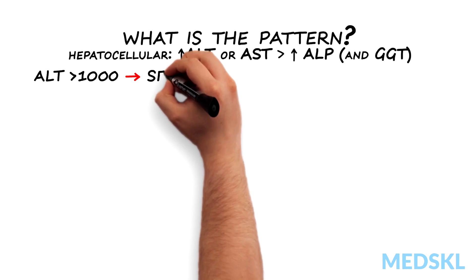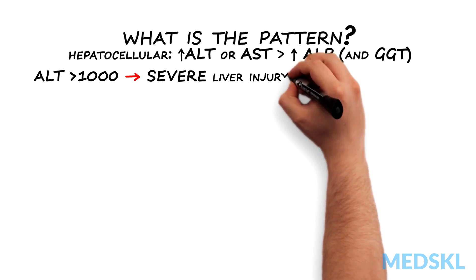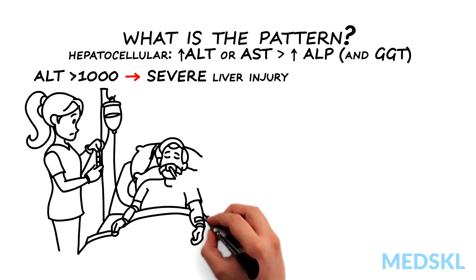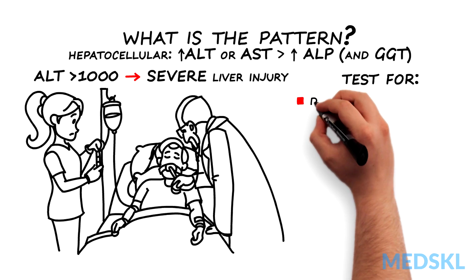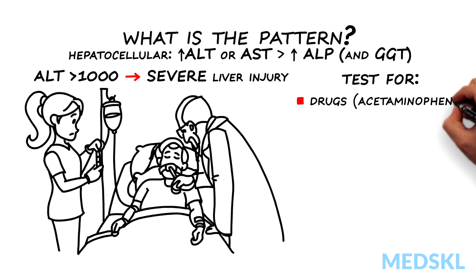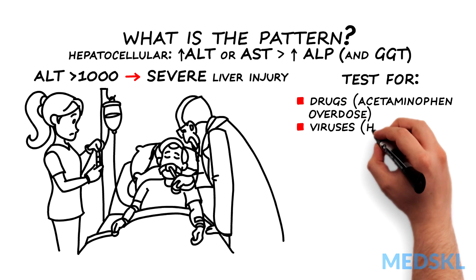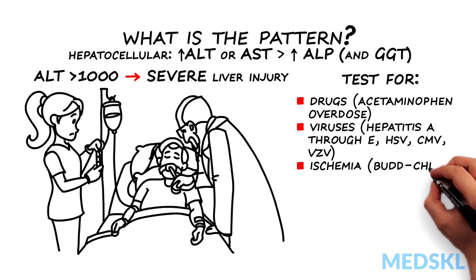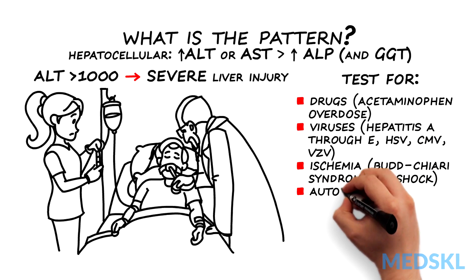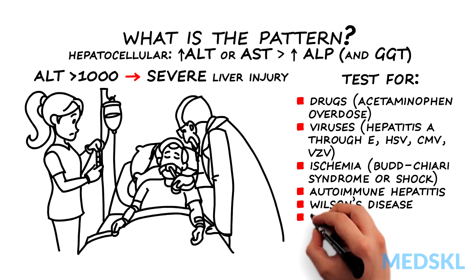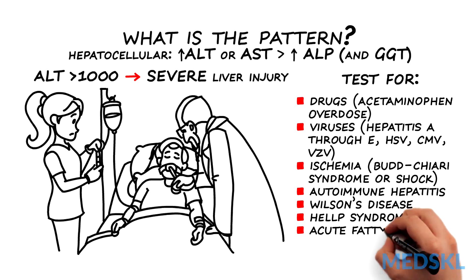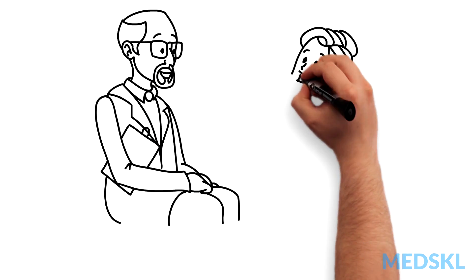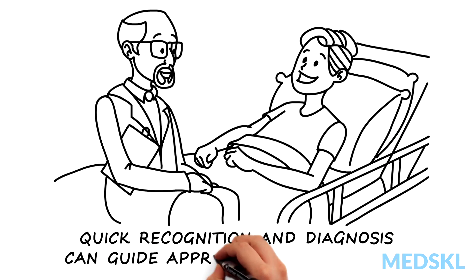If the ALT is greater than 1000, there is severe liver injury which is always acute and symptomatic. These patients are at high risk of acute liver failure. If you see these values, think and test for the following: drugs, especially acetaminophen overdose; viruses including hepatitis A through E, HSV, CMV, and VZV; ischemia from Budd-Chiari syndrome or shock; autoimmune hepatitis; Wilson's disease; and if the patient is pregnant or recently postpartum, HELLP syndrome or acute fatty liver of pregnancy. A quick recognition and diagnosis can guide appropriate management in these patients.